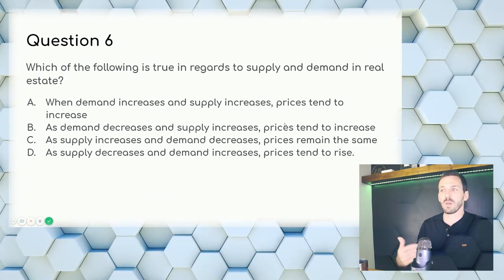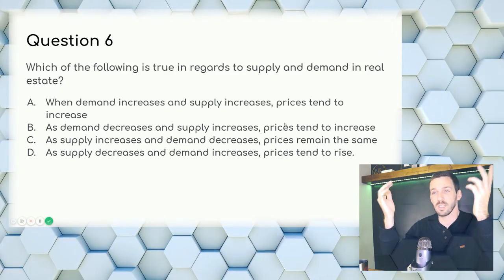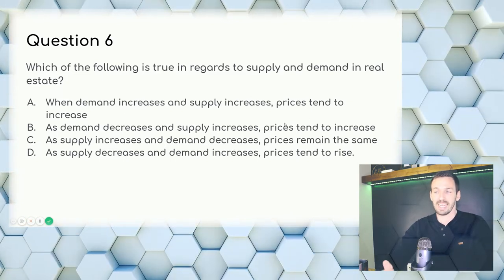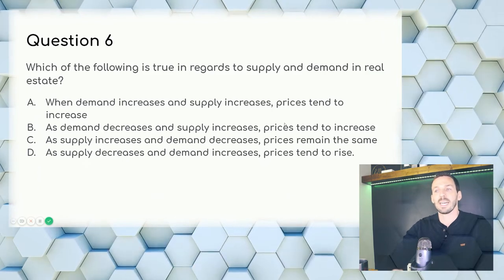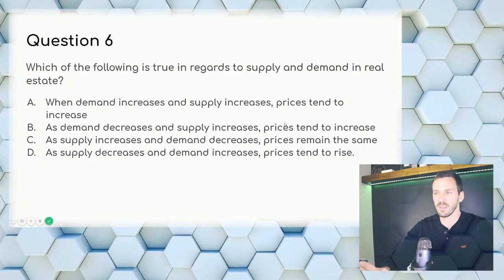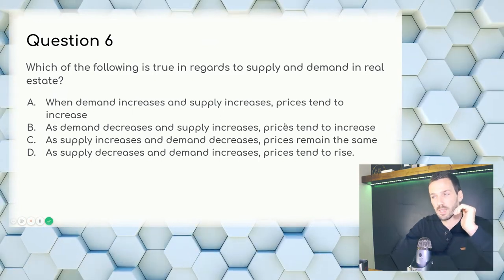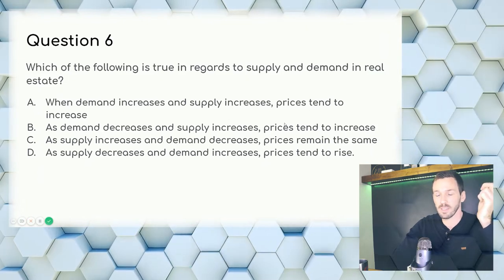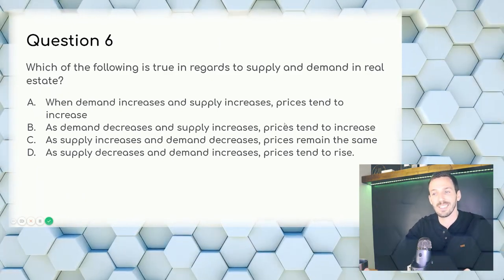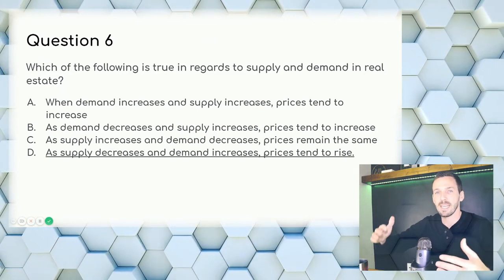Question 6: Which is true regarding supply and demand in real estate? When supply decreases there are fewer homes, which alone can cause a price increase — like we're seeing now. Pair that with increasing demand and more people wanting to buy, and you have a ton of buyer competition. Answer: D — as supply decreases and demand increases, prices tend to rise.